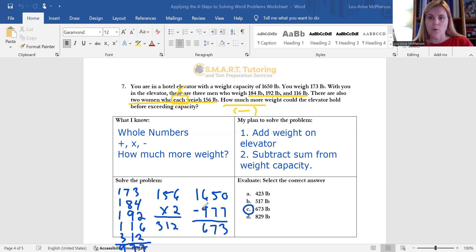So that's listed there for you. Number one, you're going to add the weight on the elevator that is there. And when you're adding the weight, keep in mind you're going to first have to do some back math in the sense that you have to multiply the two by the 156, and then add that product to the 184, 192 and 116, then do your adding for all of the weight. Okay. So add the weight on your elevator and then subtract that sum from your weight capacity.